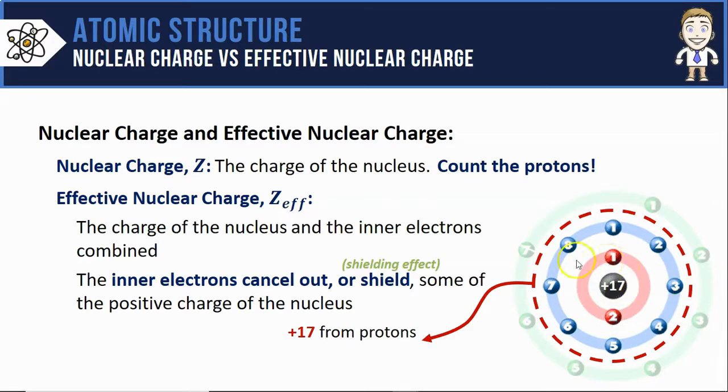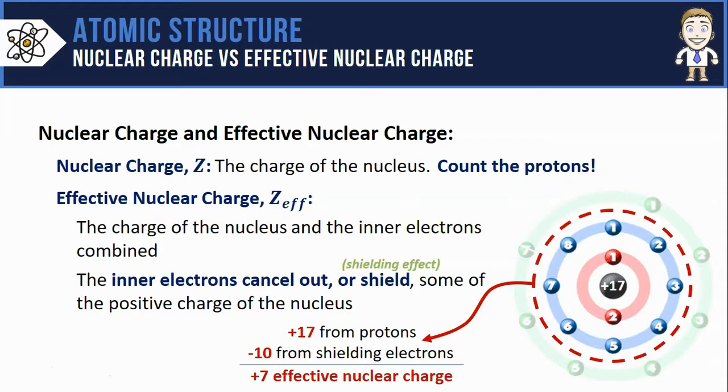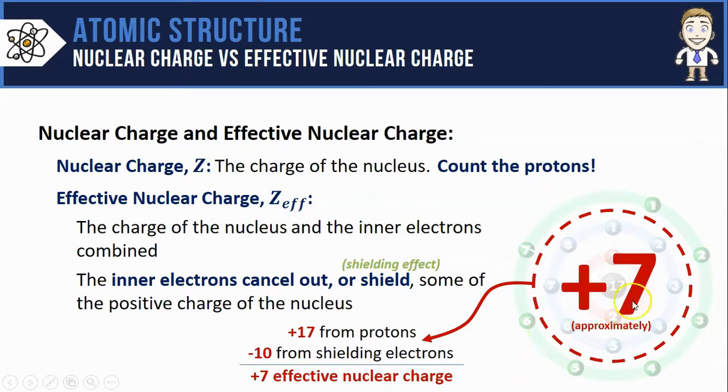canceling out, or shielding some of that plus 17 charge from the protons. Since those 10 electrons are canceling out some of that positive 17 from the nucleus, we subtract out 10 from that 17 leaving us with a plus 7. That is the effective nuclear charge of that nucleus and these core electrons combined.